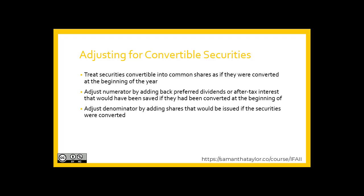For convertible securities, we treat these as if they had been converted into common shares at the beginning of the year, or when issued if they were issued during the year. We adjust the numerator by adding back preferred share dividends or after-tax interest that would have been saved, and adjust the denominator by adding the shares that would be issued upon conversion.